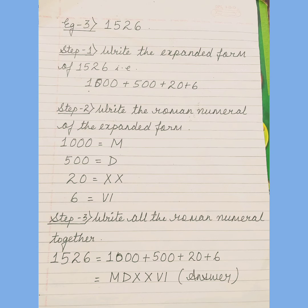Now 1526. Write the expanded form again first. So 1000 plus 500 plus 20 plus 6. Now what is the Roman numeral form? 1000 is M, 500 is D, 20 is XX, 6 is VI.